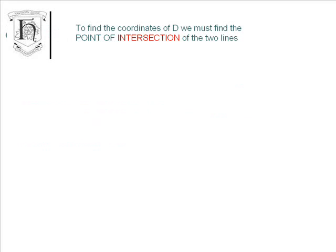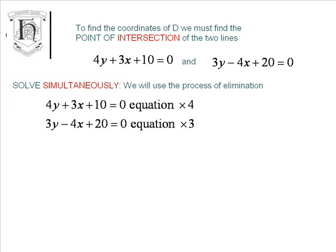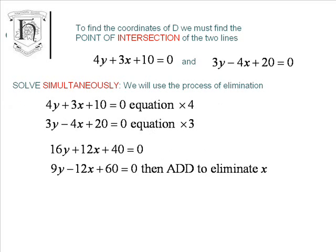To find the coordinates of D, we need to find the point of intersection of the two lines. They are the two lines that we've found earlier in the question, and D is the point at which they cross each other. Simultaneous equations is what we're going to use. I've decided to use the process of elimination, so if we write down our two equations underneath each other, using standard methods, we're going to multiply the first equation by 4, the second equation by 3, and then we're going to add so that we can eliminate the X coefficients and variables.